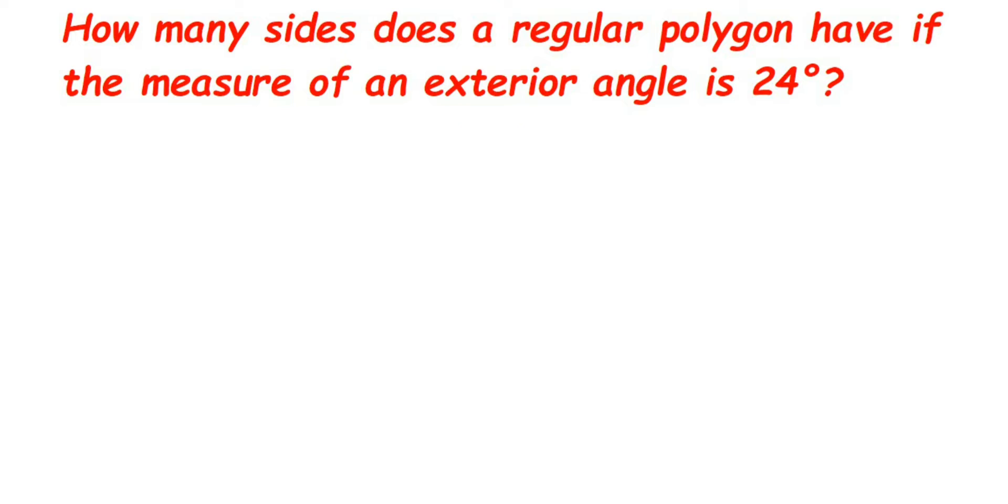Hello everyone. This is a question on understanding quadrilaterals of class 8. The question is: how many sides does a regular polygon have if the measure of an exterior angle is 24 degrees? Now they have given that the exterior angle, one of the exterior angles, is 24 degrees.